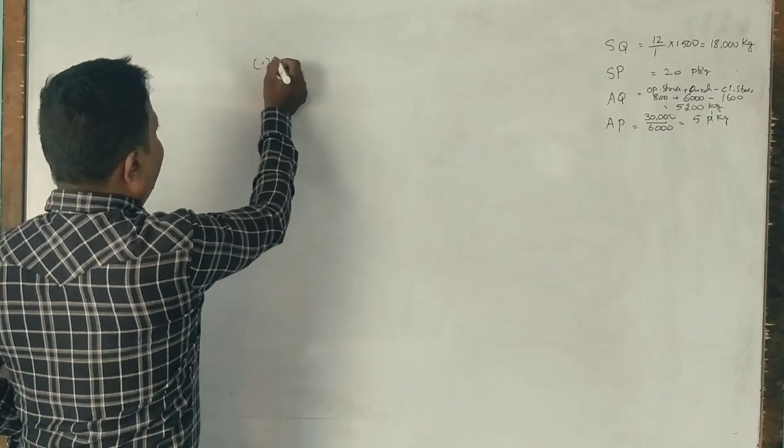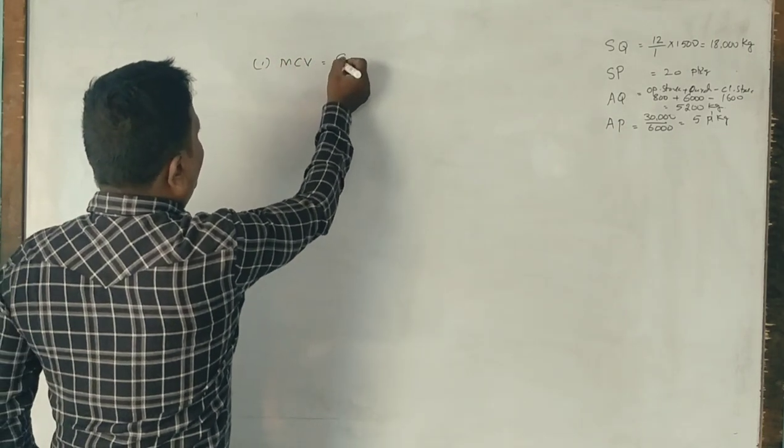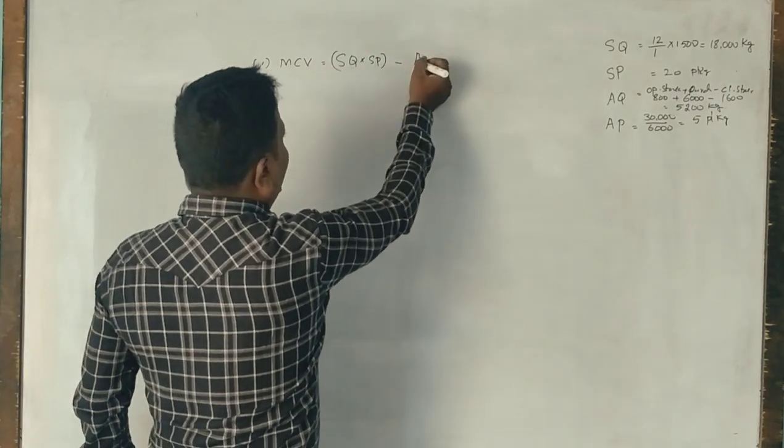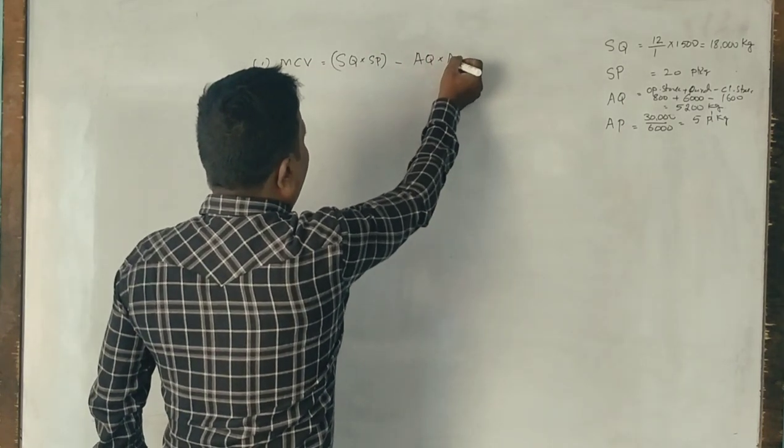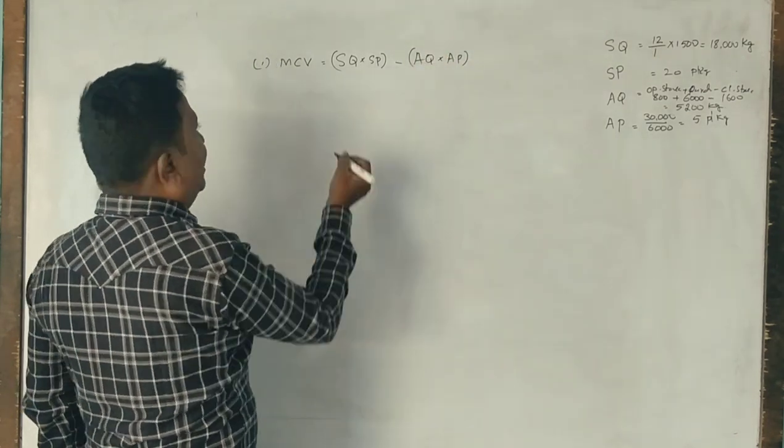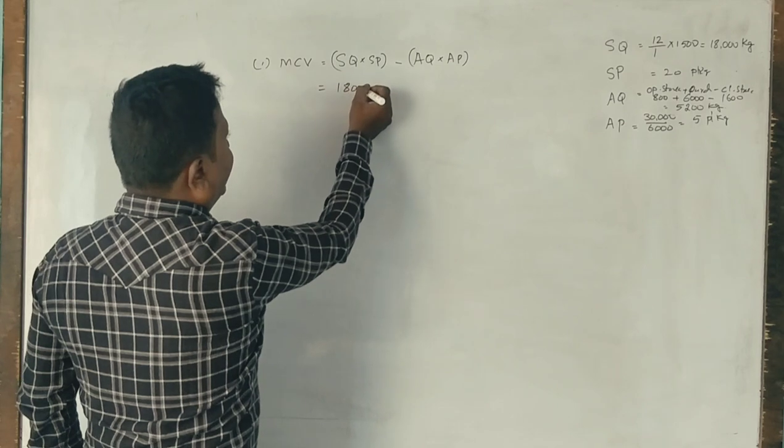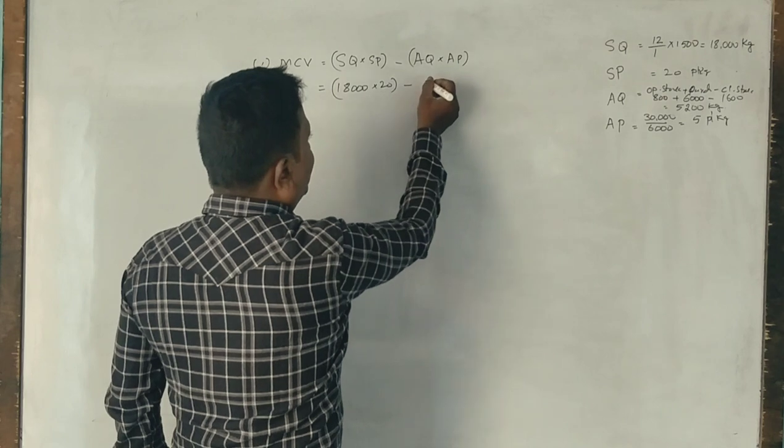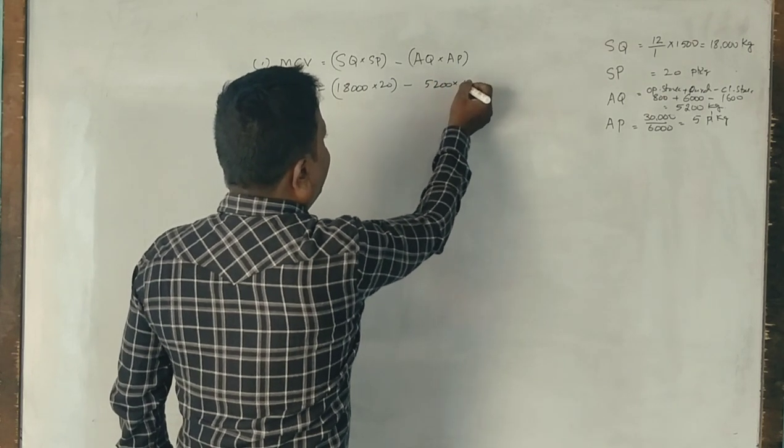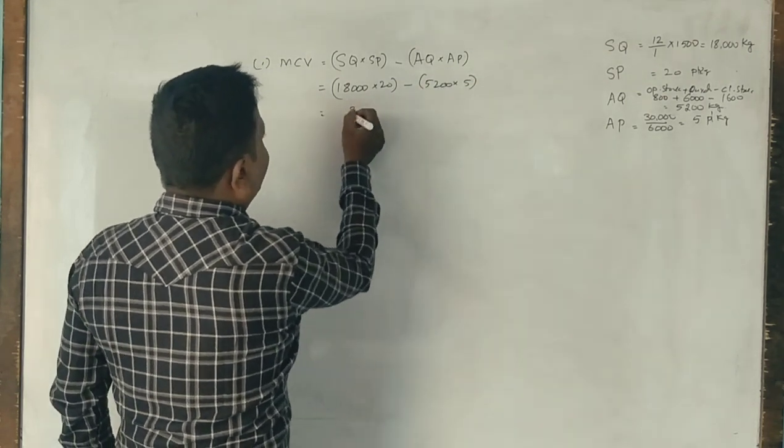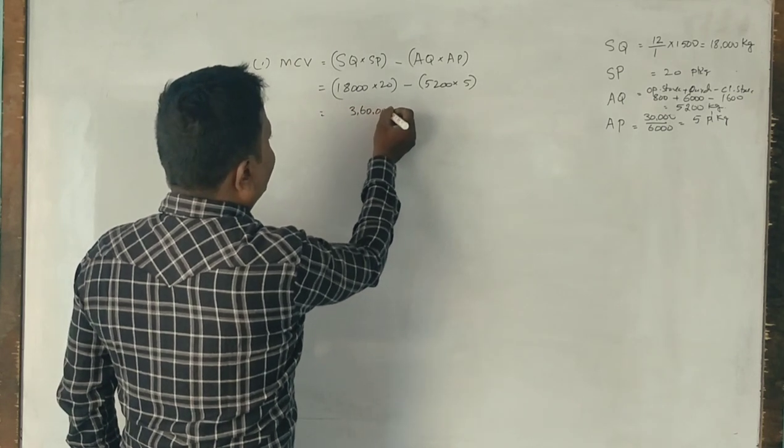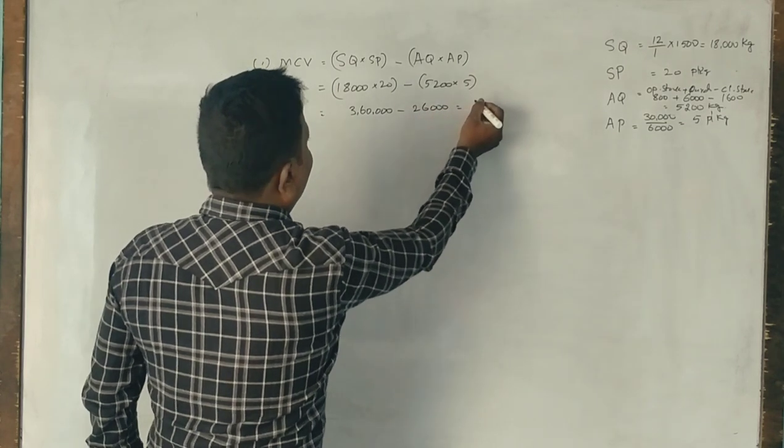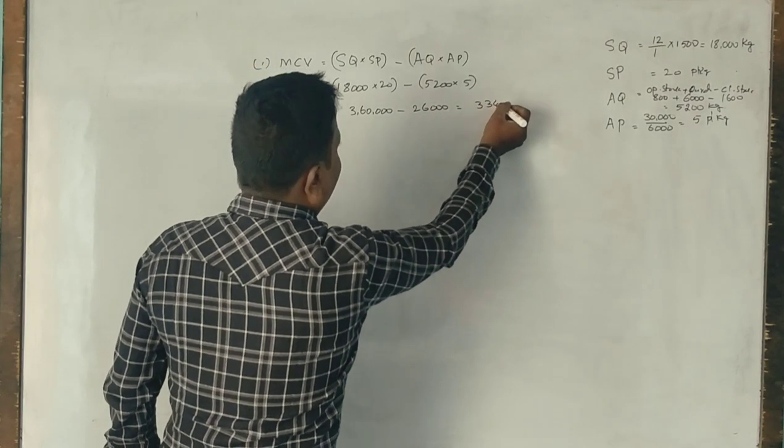First one, material cost variance. What is the formula? Standard quantity into standard price minus actual quantity into actual price. Standard quantity is 18,000 kg, standard price is 20 rupees, actual quantity is 5,200, and price is 5 rupees. 3,60,000 minus 26,000 equals 3,34,000.